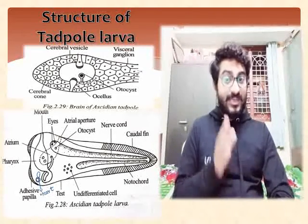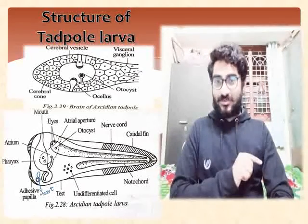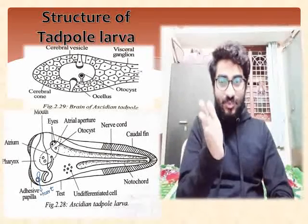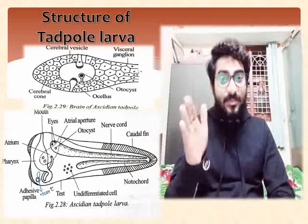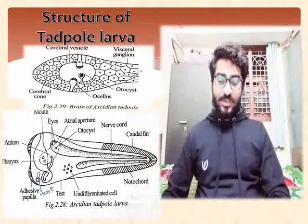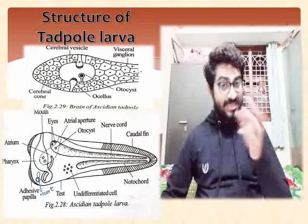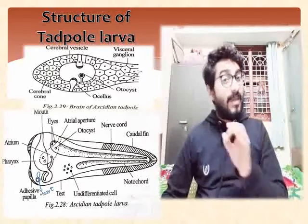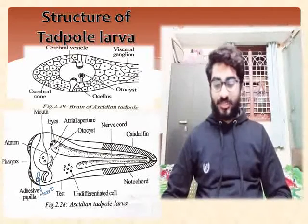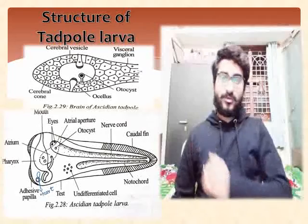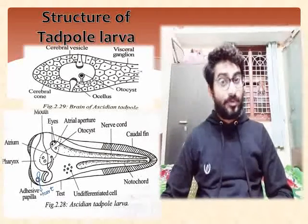The notochord is absent in the trunk region. On either side of the notochord there are muscle bands, which help in attachment — muscles attach to the notochord. Just above the notochord there is a tubular nerve cord.